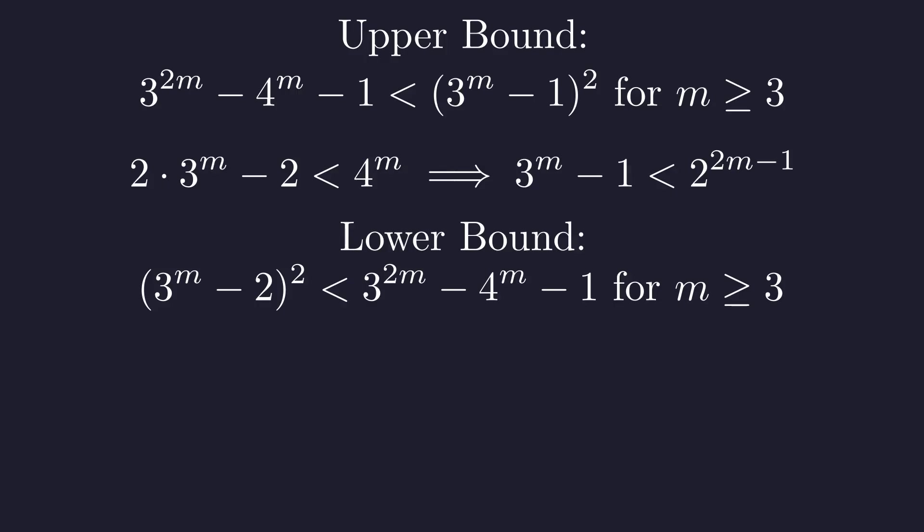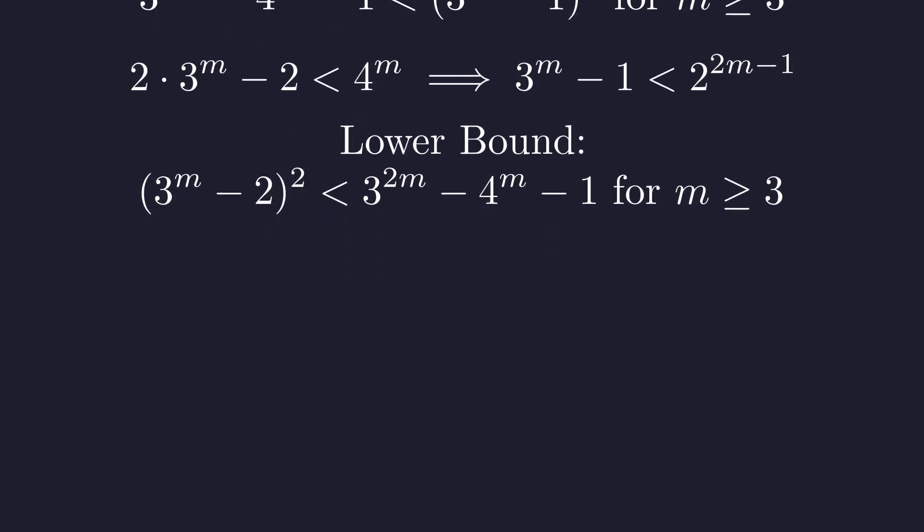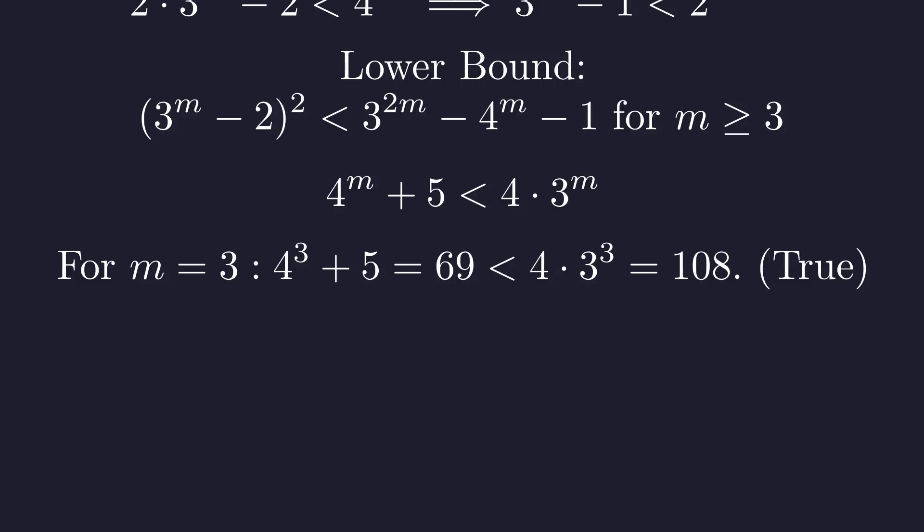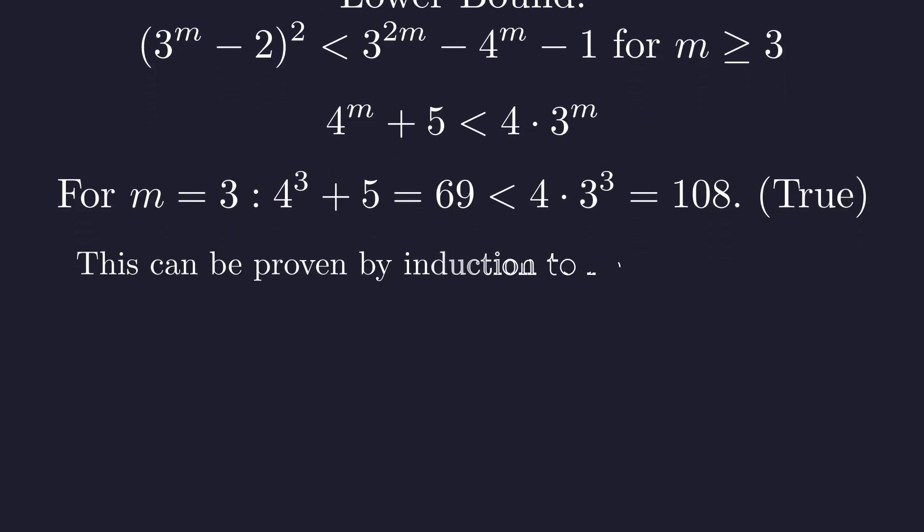Second, we prove the lower bound. Our expression is greater than the square of 3 to the m minus 2. Expanding the left side and cancelling the common term, and rearranging gives this inequality: 4 to the m plus 5 must be less than 4 times 3 to the m. We can verify this for m equals 3: 69 is less than 108. It holds. Because the left side grows by a factor approaching 4, while the right side grows by a factor of 3, this inequality holds for all m greater than or equal to 3. The lower bound is secure.